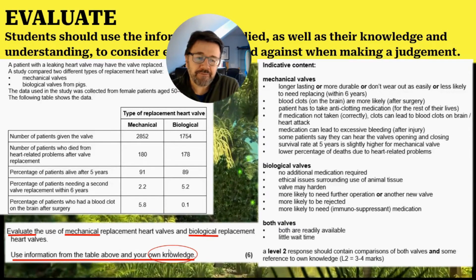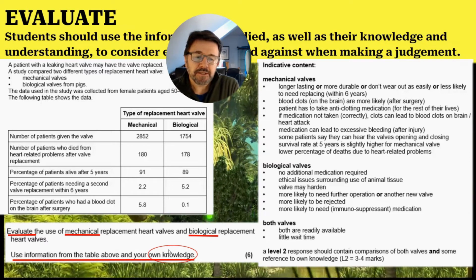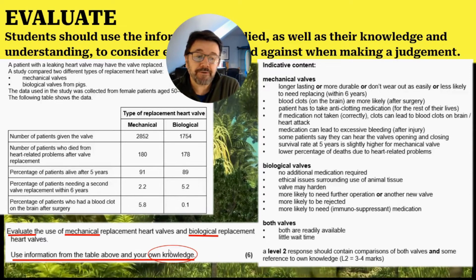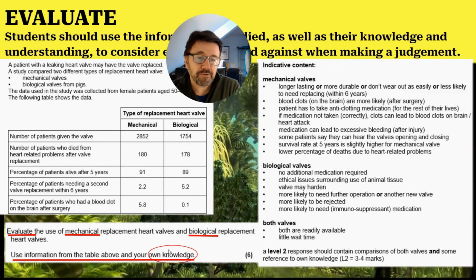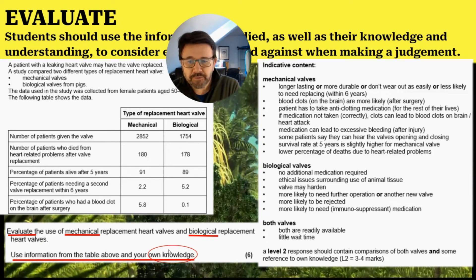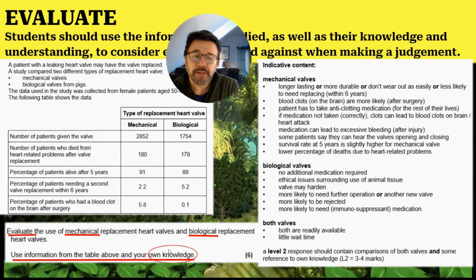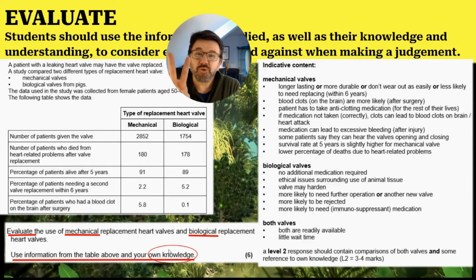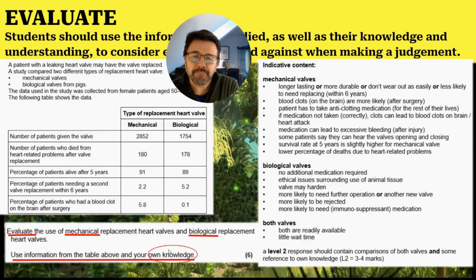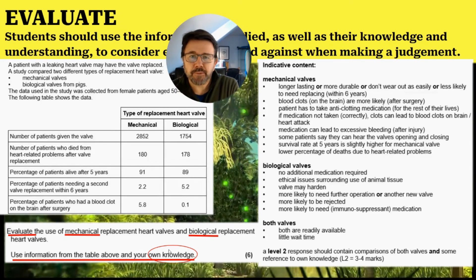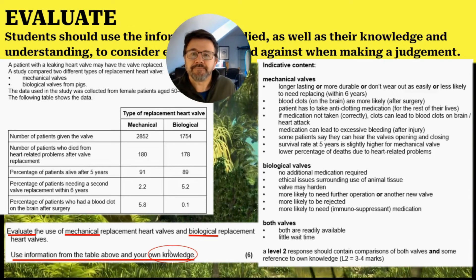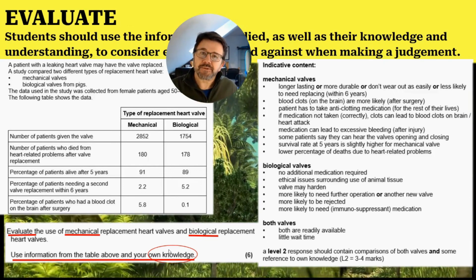At the bottom it notes a level two response — this is a six mark question, so level two is between three and four marks. The response must contain comparisons of both valves and some reference to your own knowledge. If you only talk about information in the table, they can only give you a maximum of two marks, so be careful not to spend too much time on the table — your own knowledge is probably more important. I hope you found that useful. Please subscribe and I'll see you soon.